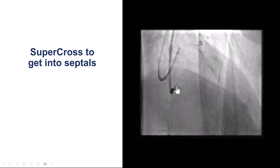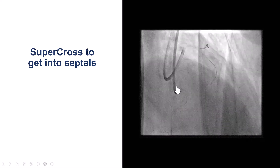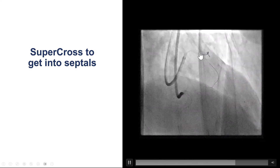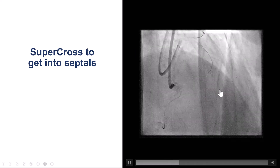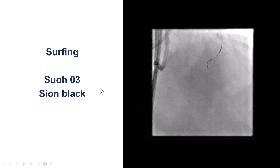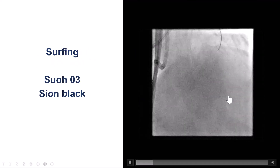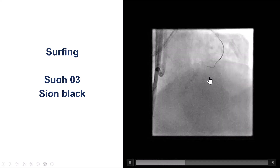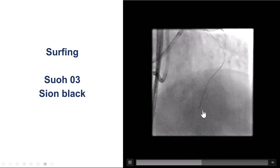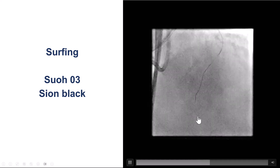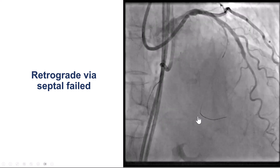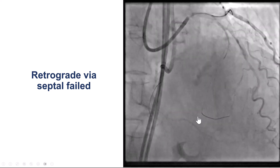After several attempts, we switched to retrograde. We encountered difficulty getting the wire into the septal despite different bends, so we used a Supercross 120, and then there was surfing using the Suoh 03 as well as the Confianza Black. However, despite multiple attempts, the wire could not cross into the distal RCA.